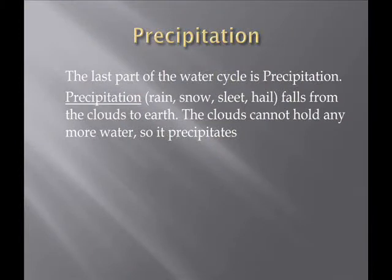Precipitation is the last part of the water cycle. Precipitation can be rain, snow, sleet, or hail. It falls from the clouds to the earth. The clouds cannot hold any more moisture, so it precipitates.